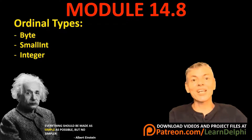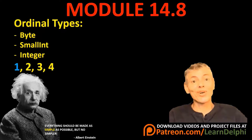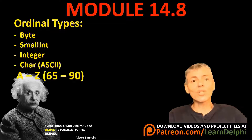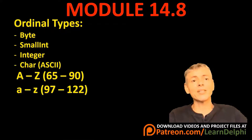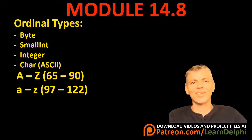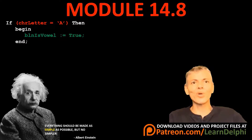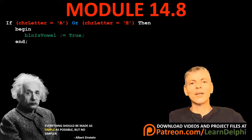An ordinal type is a data type whose values follow each other in a logical and regular sequence, like all the integer types: byte, smallint, and integer. For example, 2 follows 1, 3 follows 2, and the sequence is logical and predictable. Characters also follow each other in a logical sequence because they have ASCII numbers ranging from 65 to 90 for uppercase letters and 97 to 122 for lowercase letters. You can go back to unit 11.1 and 11.2 if you are not familiar with ASCII. Let's look at examples of sets with characters. This IF statement checks if CHR letter is uppercase A — if so, the value TRUE is assigned to the boolean.